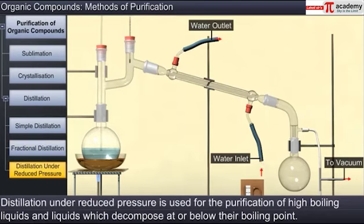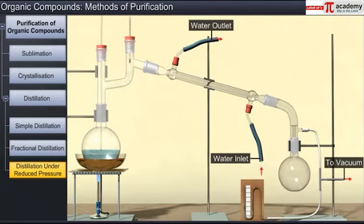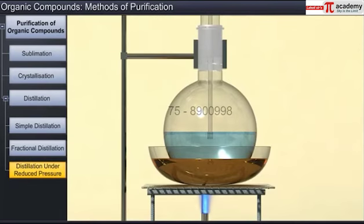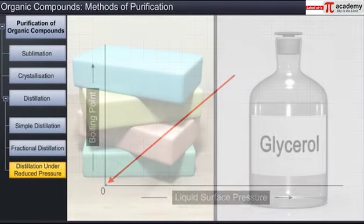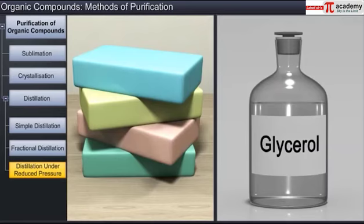In the case of liquids with very high boiling points and liquids that decompose at or below their boiling points, another method called distillation under reduced pressure is used for purification. In this method, the pressure on the liquids is reduced with the help of a water pump or a vacuum pump. As we know, a liquid starts to boil when its vapor pressure becomes equal to the external pressure. Thus, reducing the pressure on the liquid surface reduces the boiling point of the liquid. In soap industries, glycerol is separated from spent lime using this method.